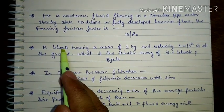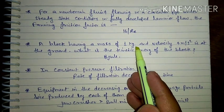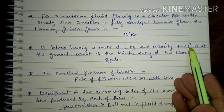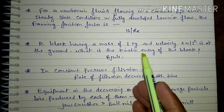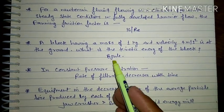Next: A block having a mass of 1 kg and velocity 4 meter per second is at the ground. What is the kinetic energy of the block? 8 joules.